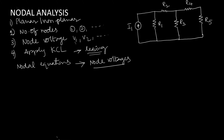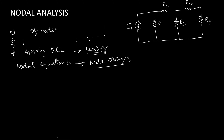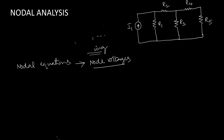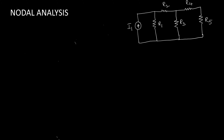To understand nodal analysis we have an example on the right side. This example has one current source and five resistors connected as you can observe on the screen. The first step: we observe whether the given network is planar or non-planar. Since the network has no crossovers, we can state that the given network is planar, so we can apply nodal analysis.